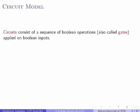Circuits are sequences of Boolean operations. Each operation is also called a gate, and these are applied on Boolean inputs. Typical operations are AND, OR, and NOT — these are the most common ones.